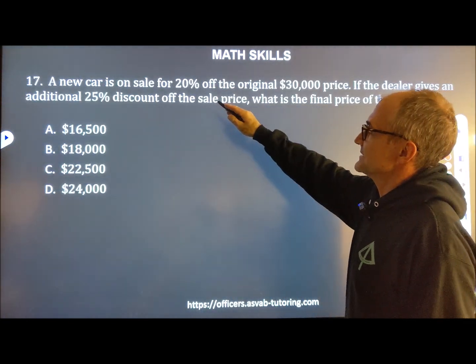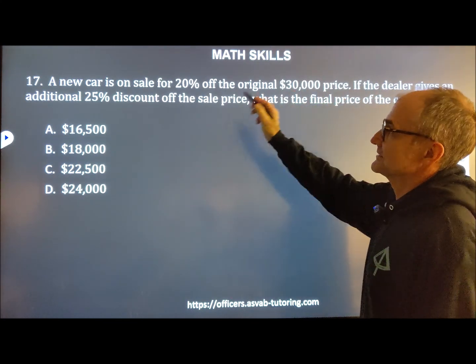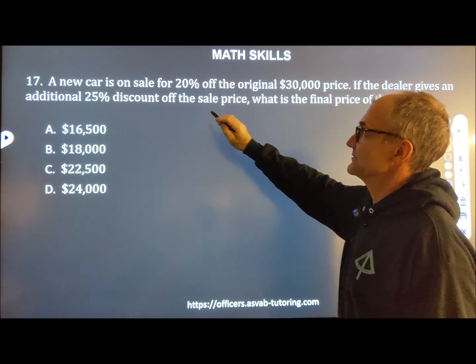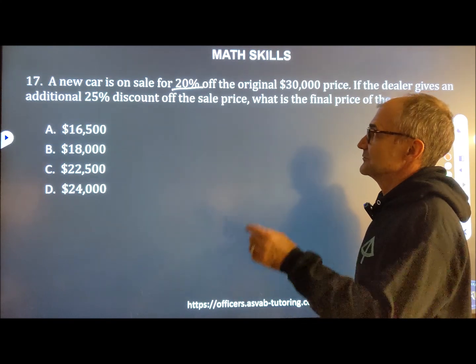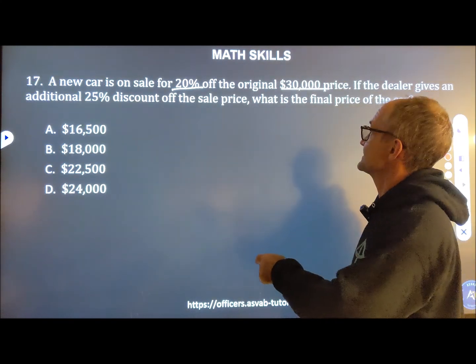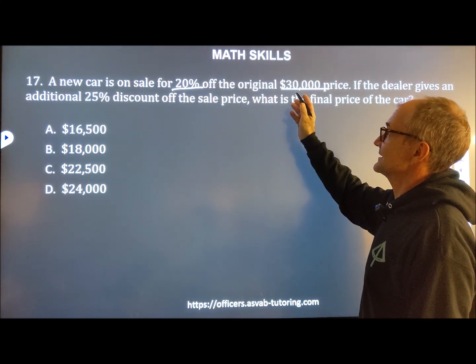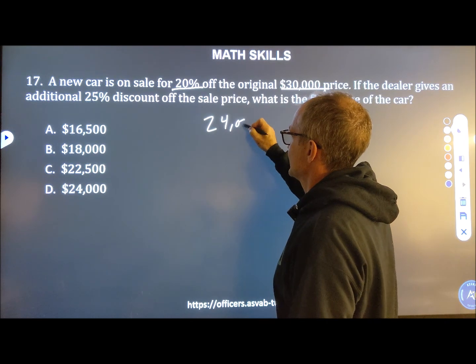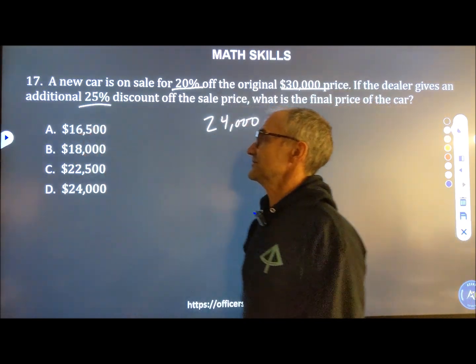The new car is on sale for 20% off the original $30,000 price. The dealer gives an additional 25% discount on the sale price. So first thing we've got to do is figure that 20% off of 30,000. Well, 2 times 3 is 6. So it's going to be $6,000 off. 20% of 30 is 6,000. So I have $24,000.